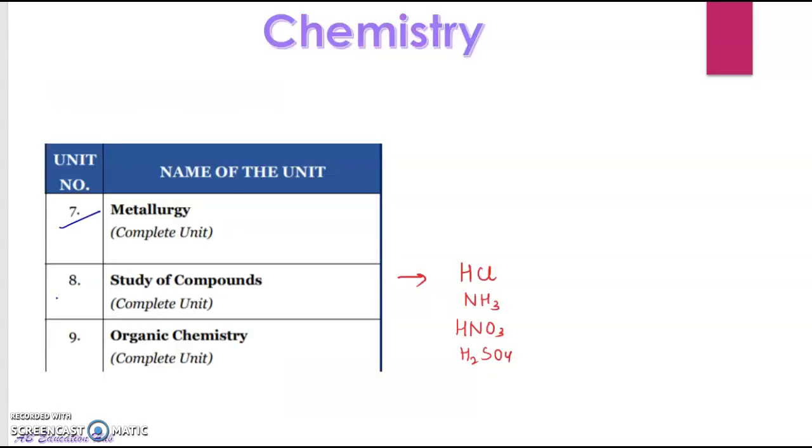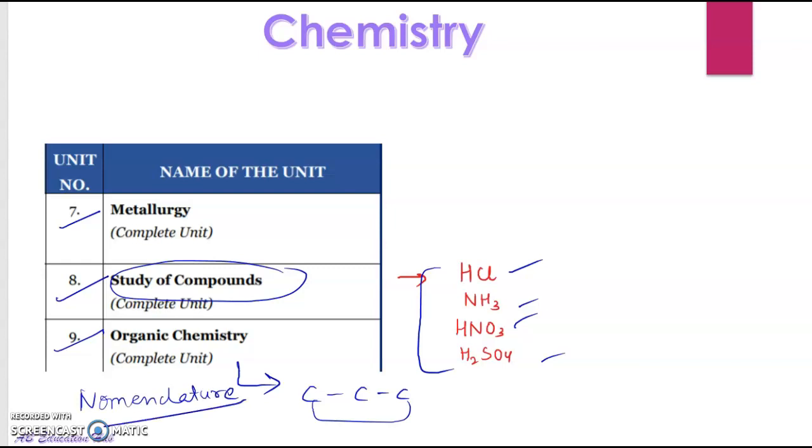Now Chemistry: metallurgy, study of compounds, organic chemistry. Now study of compounds means all these four chapters, that is hydrogen chloride, ammonia, nitric acid, and sulfuric acid. Organic chemistry, they'll ask you the name of the compounds, and you know that it is all formed of carbon. So you have to do the nomenclature of compounds, naming them. You will be introduced to different things like alcohols, ethers, and all these alkanes, alkenes, alkynes.